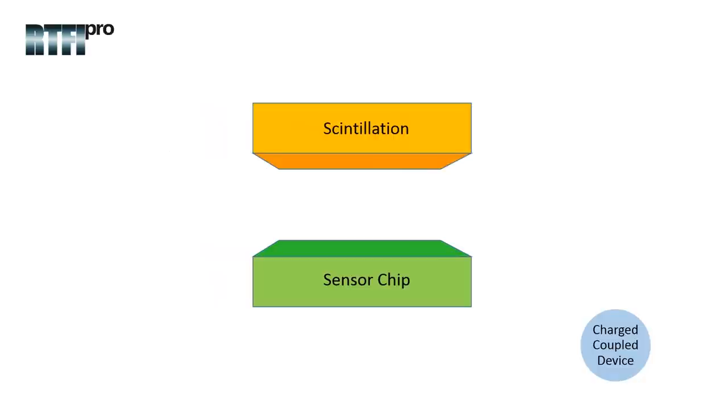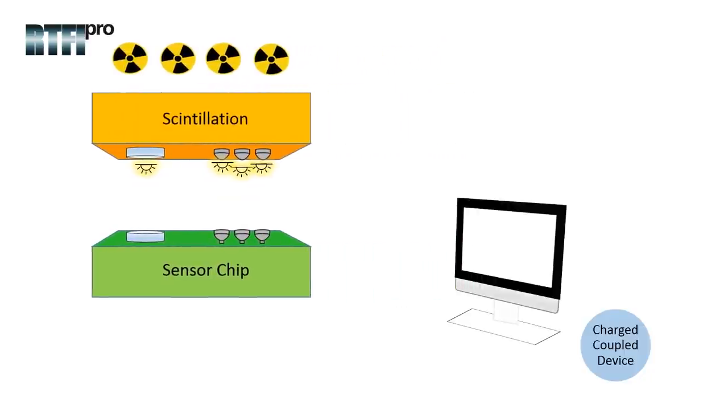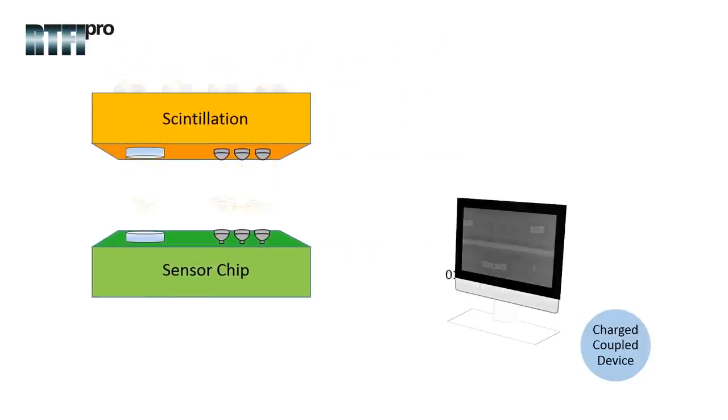The charge coupled devices are able to convert light photons into electric signals and send the electric signals or binary image to the computer for digital processing to create the image.